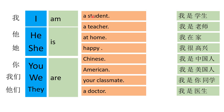I am a student. This is how we make sentences: I am, he is, she is, you are, we are, they are. Now you can make any sentence — I am a student, you are a student, he is a student, she is a student.